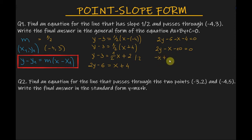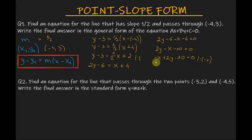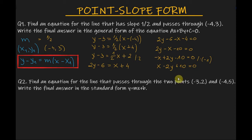So minus x plus 2y minus 10 equals 0. I will divide everything by minus 1 to eliminate the negative sign in front of x. Minus x divided by minus 1 is x, 2y divided by minus 1 is minus 2y, and minus 10 divided by minus 1 is plus 10. So x minus 2y plus 10 equals 0. This is the equation of the line in general form.